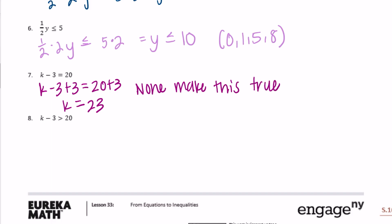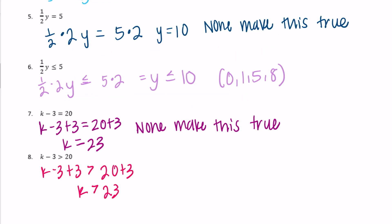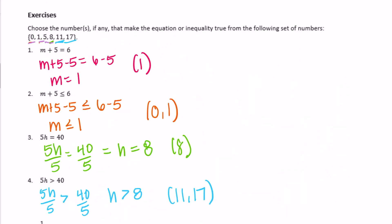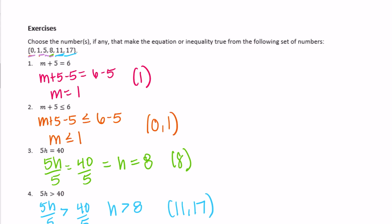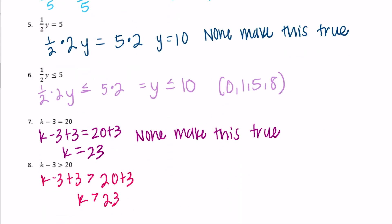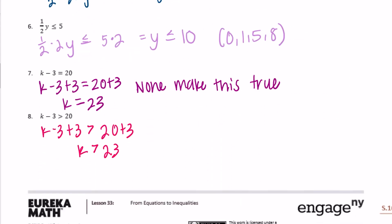Exercise 8: k minus 3 is greater than 20. Solving: k minus 3 plus 3 is greater than 20 plus 3, so k must be greater than 23. Do we have anything greater than 23? We do not — the largest number is 17. So none make this true.